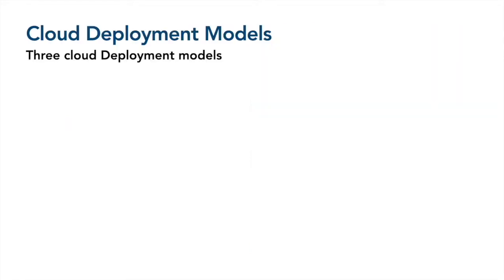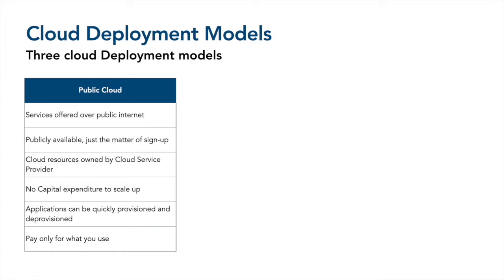Let's start with cloud deployment models. There are three types. The first one is public cloud — as the name indicates, it is publicly available and you can use it over the public internet. You just sign up and you are ready to use the cloud platform. These resources are owned by the cloud provider, there is no capital expenditure for scaling up, applications can be quickly provisioned and deprovisioned, and you pay only for what you use. Examples are Microsoft Azure, AWS, and GCP.